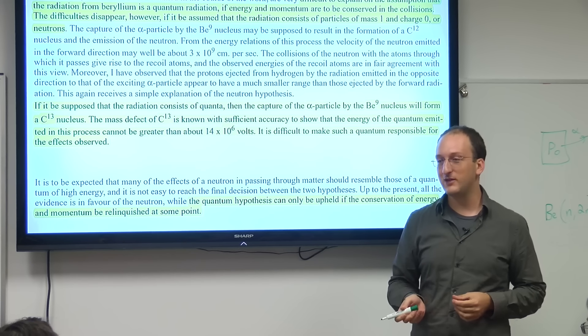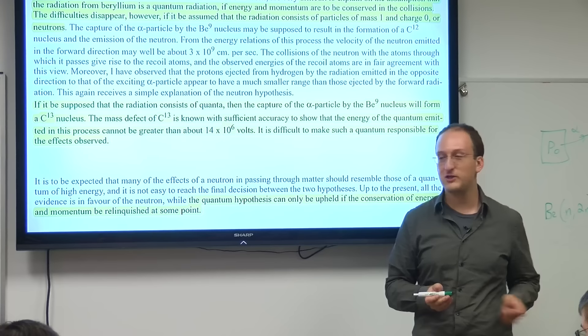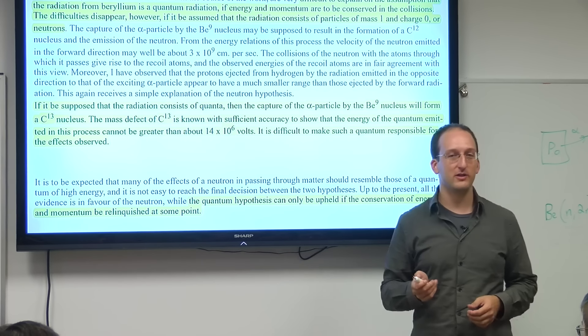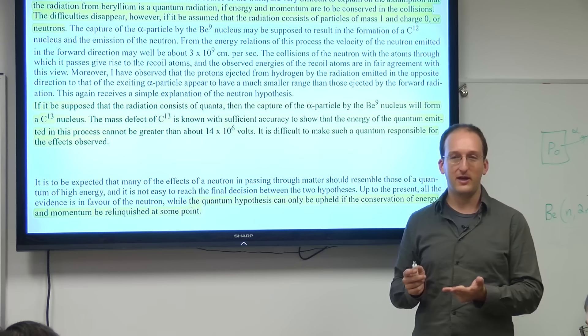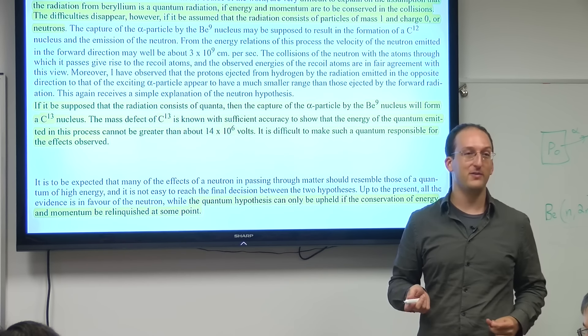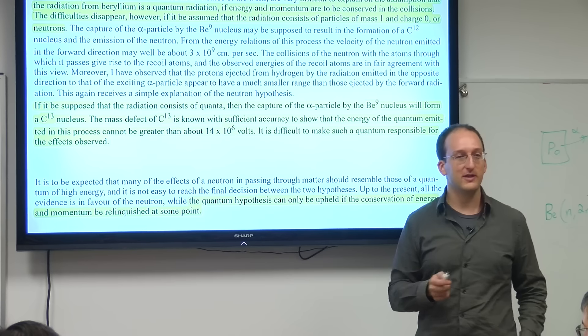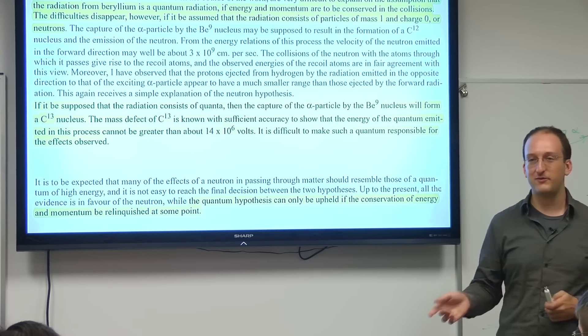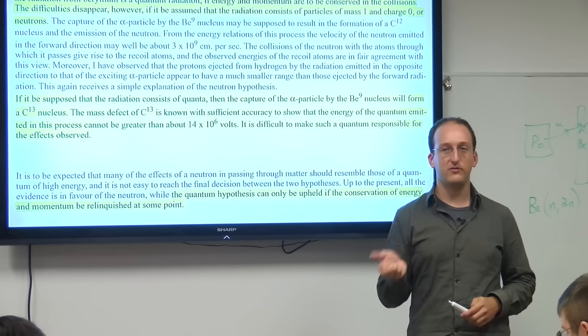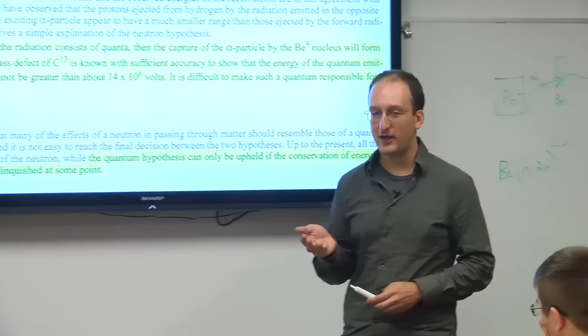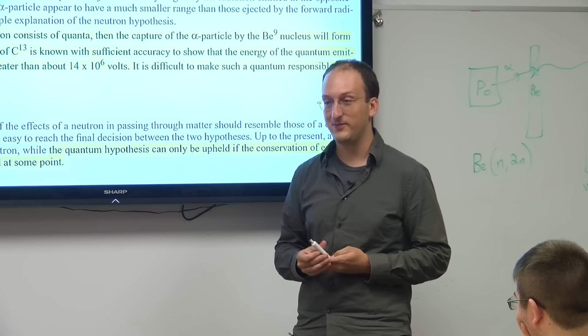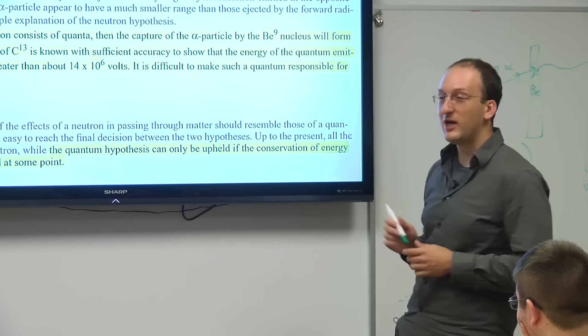There is more ionization going on than can be explained. In addition, those protons should have a range in air of about 1.3 millimeters, and they saw much more. This says something simple: theory and experiment don't match. There's got to be a different theoretical explanation if the experiment was correct. Finally, what I love—the last sentence in this—the quantum hypothesis can only be upheld if we forget about conservation of energy and momentum.